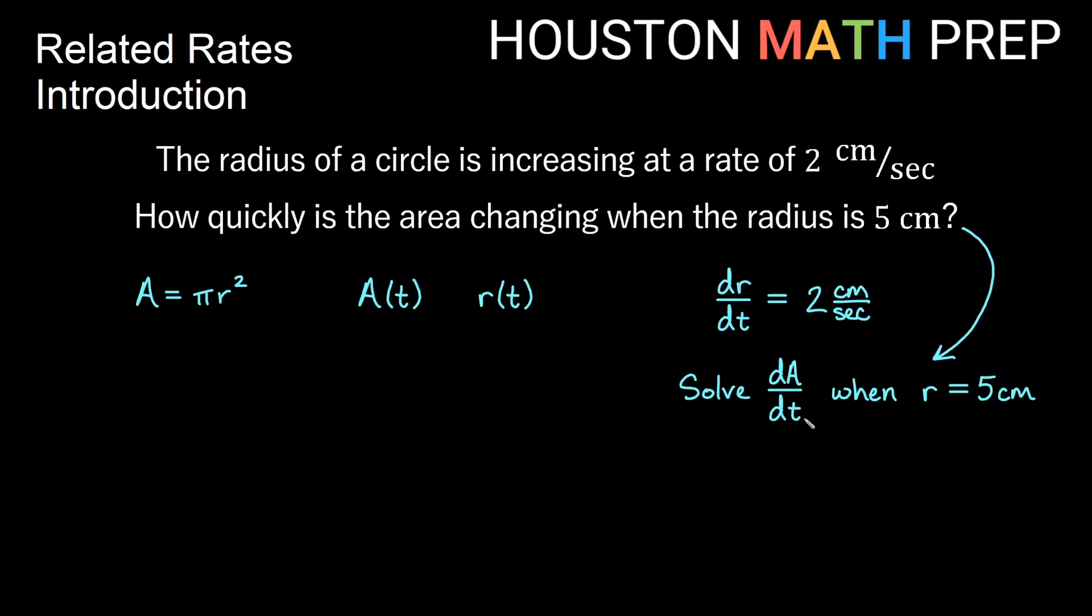The way we'll figure out how these rates are related is we'll look at our formula that relates area and radius, and we'll actually take the derivative with respect to t. So if we take the derivative with respect to t, we get dA/dt on the left is equal to,